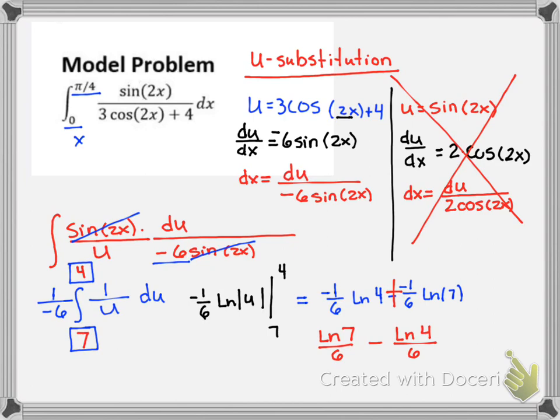So we're going to have ln of 7 over 6 minus ln of 4 over 6. Or I could factor out a 1/6. All of these are now going to be equivalent ways to write this. We could have this. Or we could have 1/6 ln of 7 over 4 using our log rules. Those are all equivalent forms of the answer.